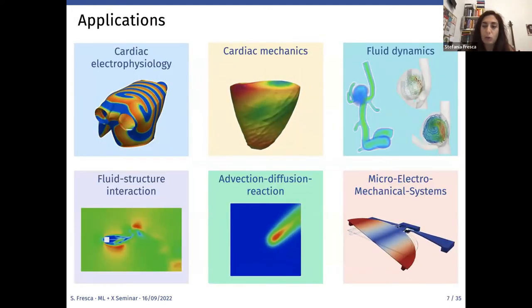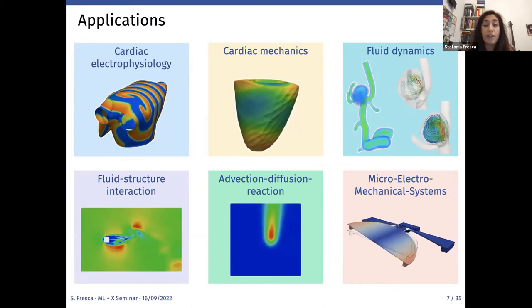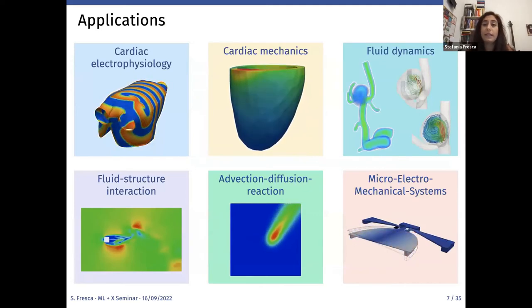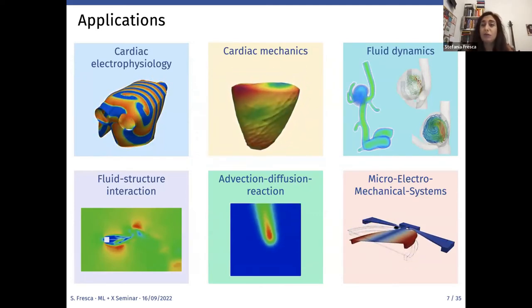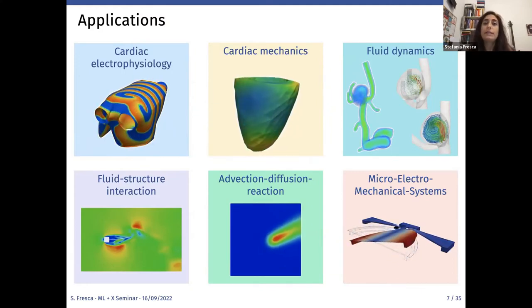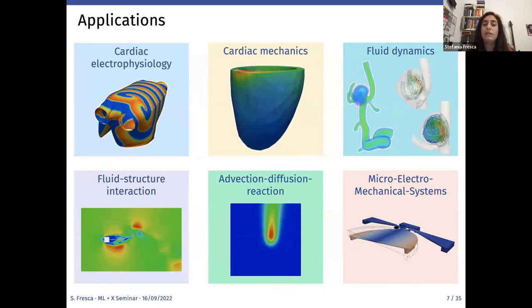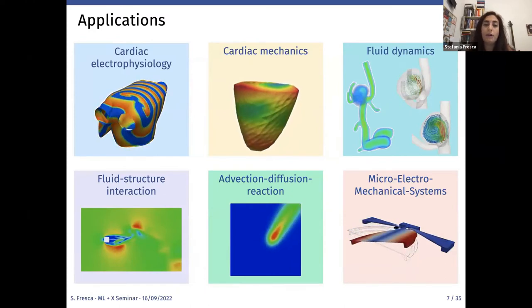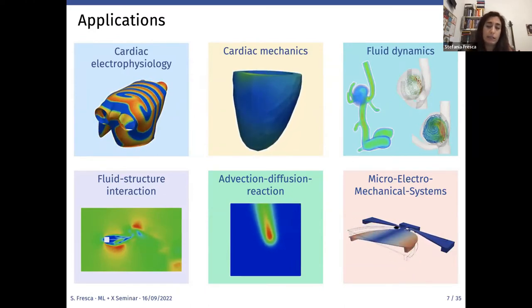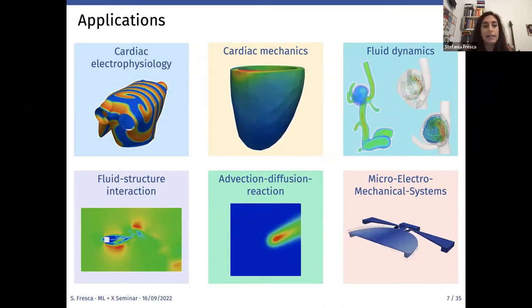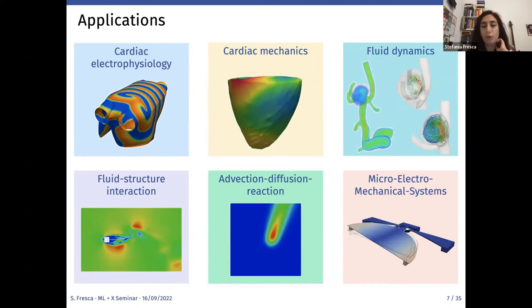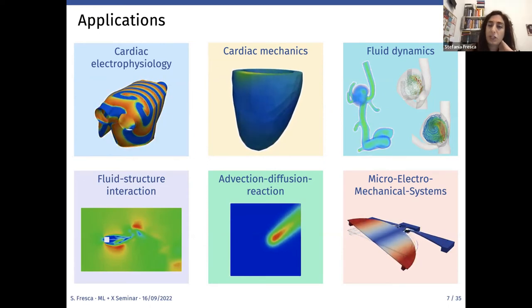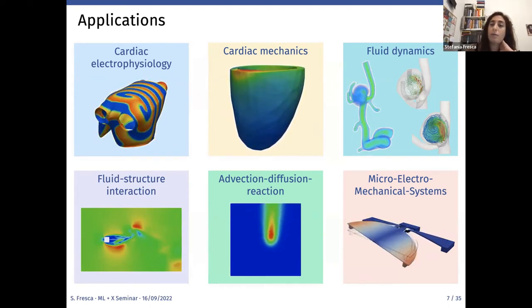Deep learning-based reduced order models have proved to be general and robust, successfully applied to a broad range of examples including cardiac electrophysiology — which originally motivated us — in order to overcome limitations of POD-Galerkin ROMs in this context, as well as cardiac mechanics, fluid dynamics, FSI problems, advection-dominated problems, and an industrial application related to micro-electromechanical systems (MEMS).